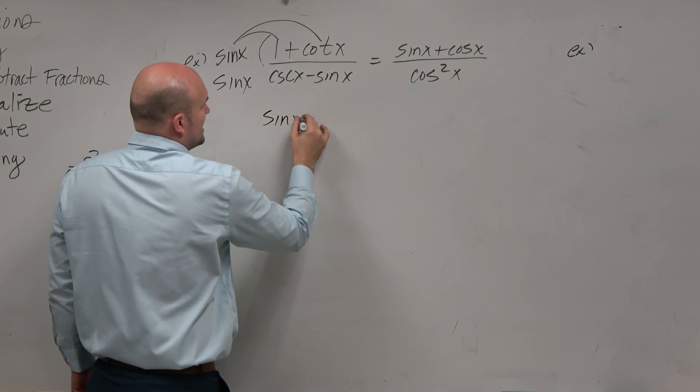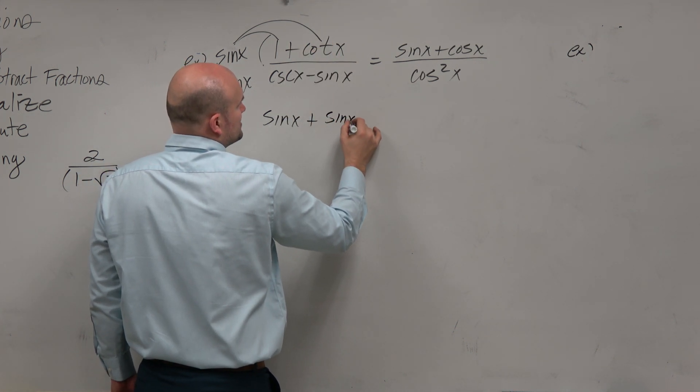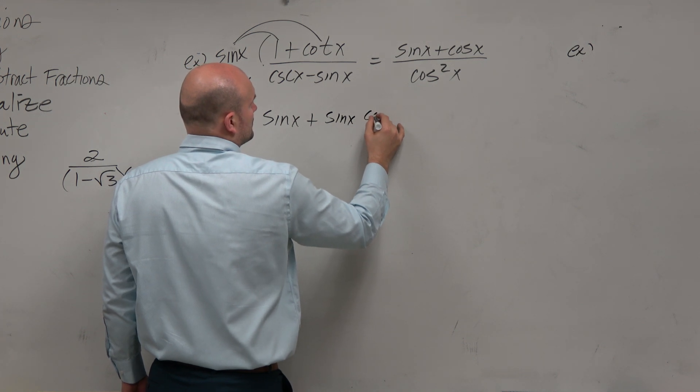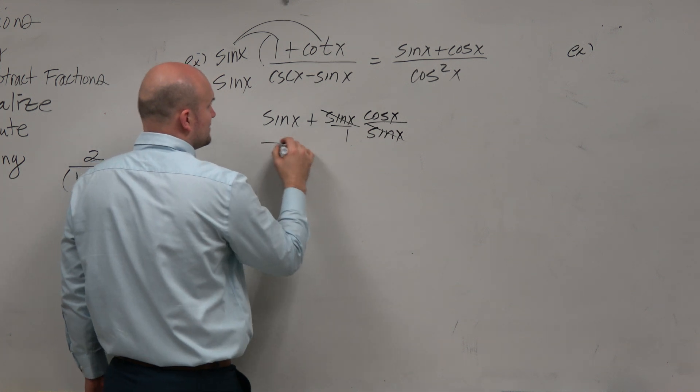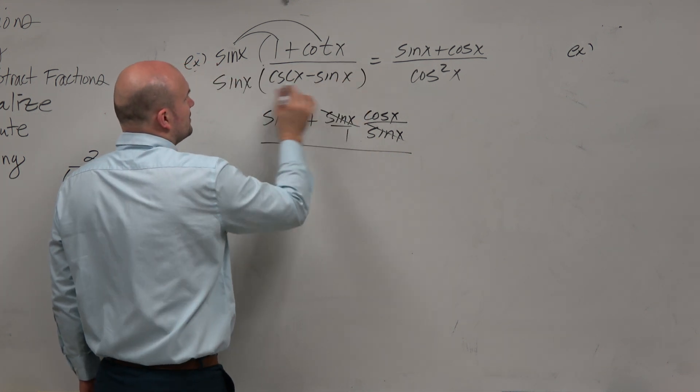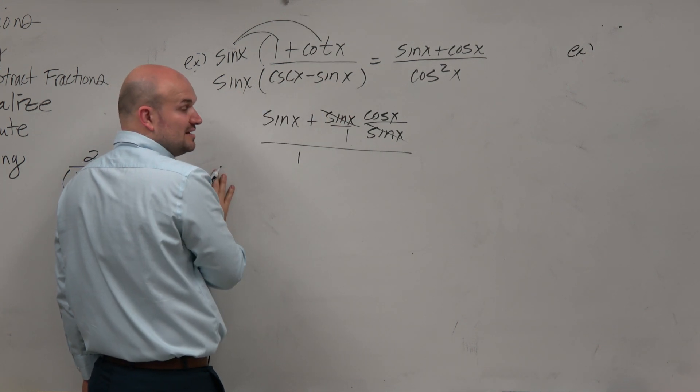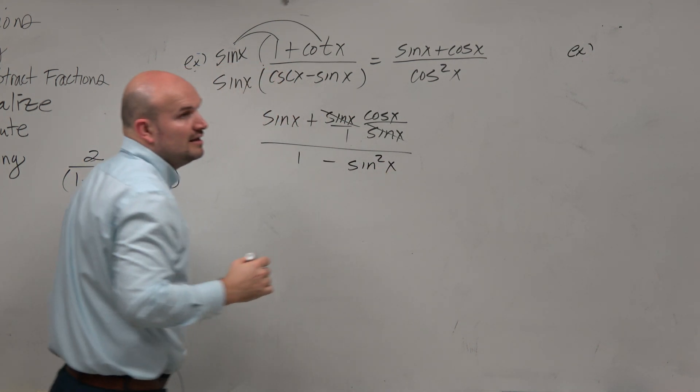So when I multiply this, I get sine of x plus, this turns into, I'll just write it out. So you guys can see how those divide out. Over here, sine of x times cosecant is 1. Sine of x times negative sine is our negative sine squared of x.